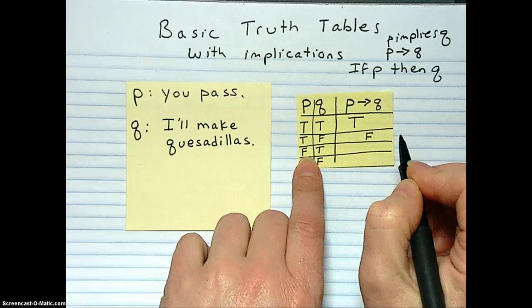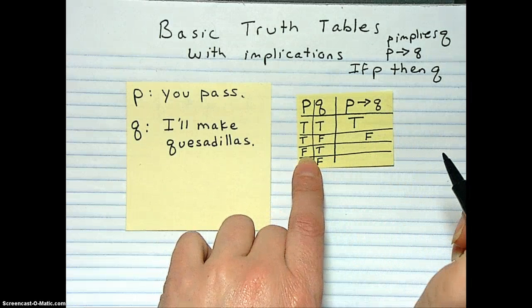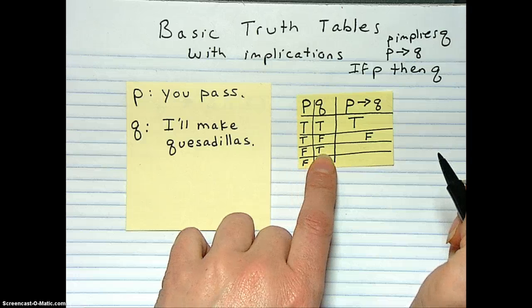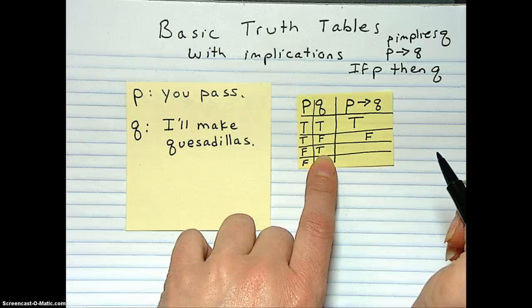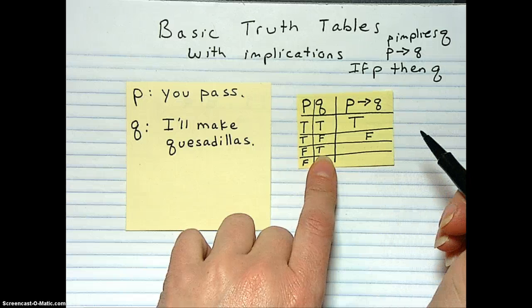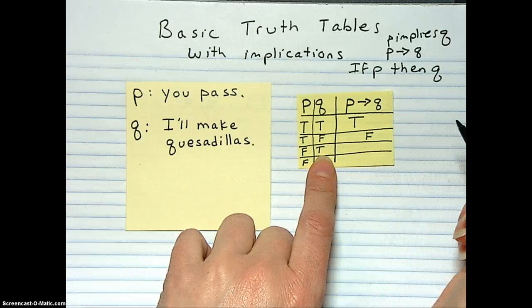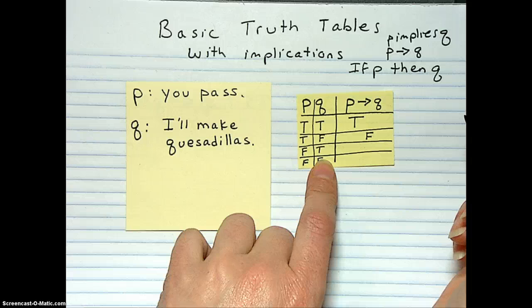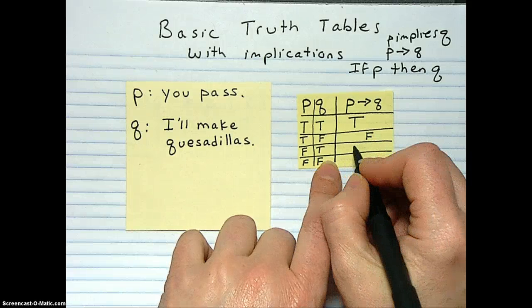So next one, did you pass the class? No. Did I make quesadillas? Yes. Is that okay? Sure. You like quesadillas, and I make great quesadillas. So it's okay. What I said is if you pass the class, then I'll make quesadillas. Did I say what would happen if you didn't pass the class? No. And quesadillas are easy to make. I make them all the time. So this is still true.